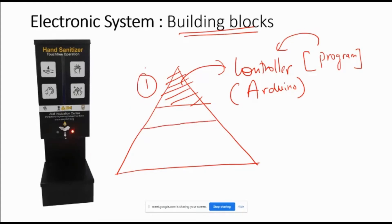The second important block, the second important component that we need is the coding part. The code is a very important part that helps you to give intelligence to this controller.